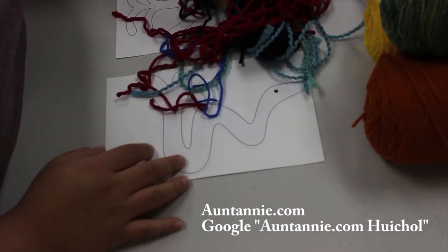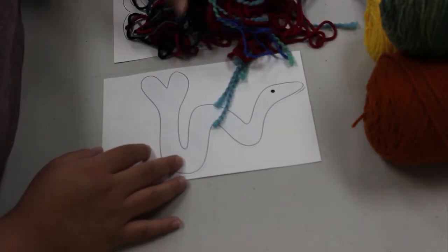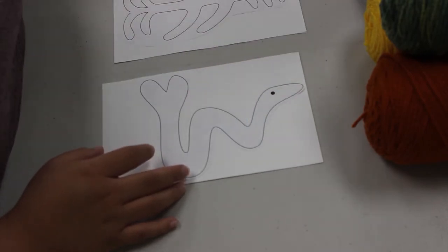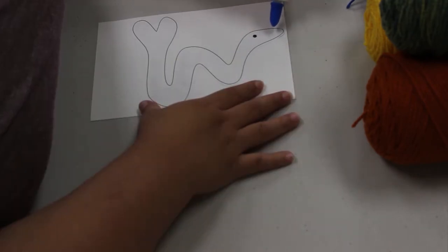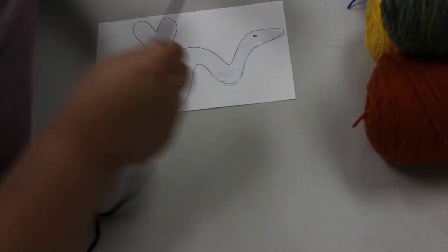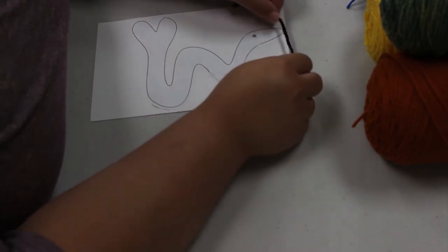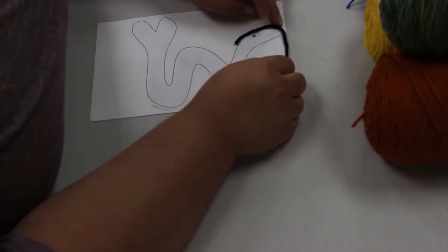I had some yarn left over from the last time I did this program, so I'm going to use that first. You can basically find any type of yarn. The first thing I'm going to do is apply some glue about four to six inches at a time. You don't want to do a whole lot. I'm going to do the outline of the snake.